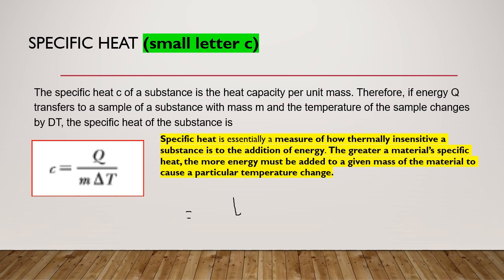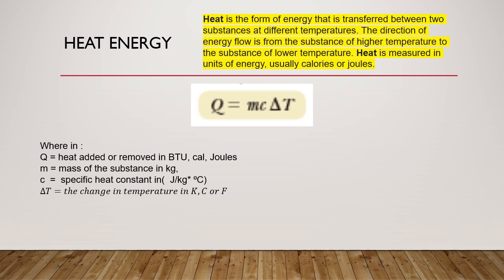Heat is a form of energy that is transferred between two substances at different temperatures. The direction of the energy flow is from the substance of higher temperature to the substance of lower temperature, from hotter to colder. As temperature increases, it gets hotter; as temperature decreases, it gets colder. Heat is measured in units of energy. If heat is energy, usually calories, BTU, or joules. Q equals MC delta T. This is the very famous equation.